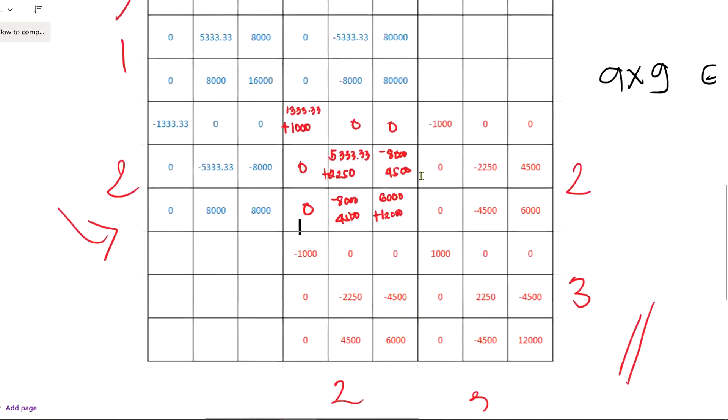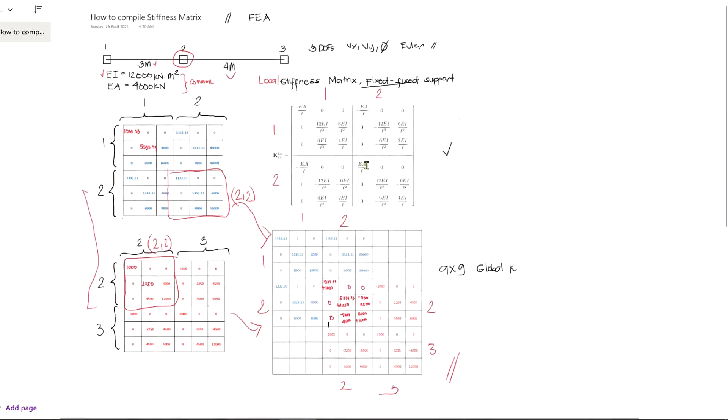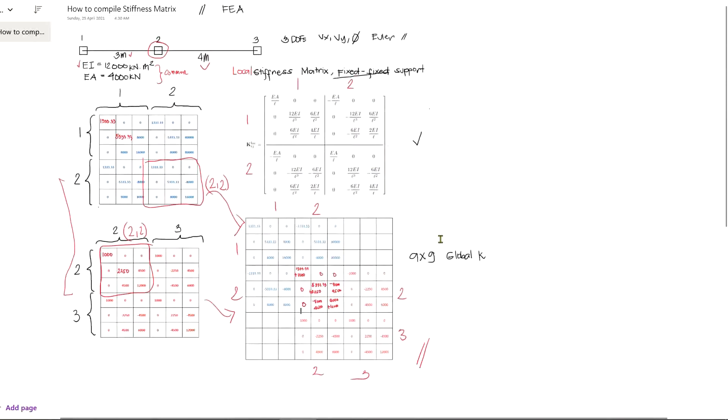The global stiffness matrix of a beam discretized by two elements. To wrap it up, how to compile global stiffness matrix from local stiffness matrix: First, you have to know the size of your global local stiffness matrix. That is based from the total number of degrees of freedom. In our case, we have three nodes, three degrees of freedom in each node, so we have a total of nine by nine.